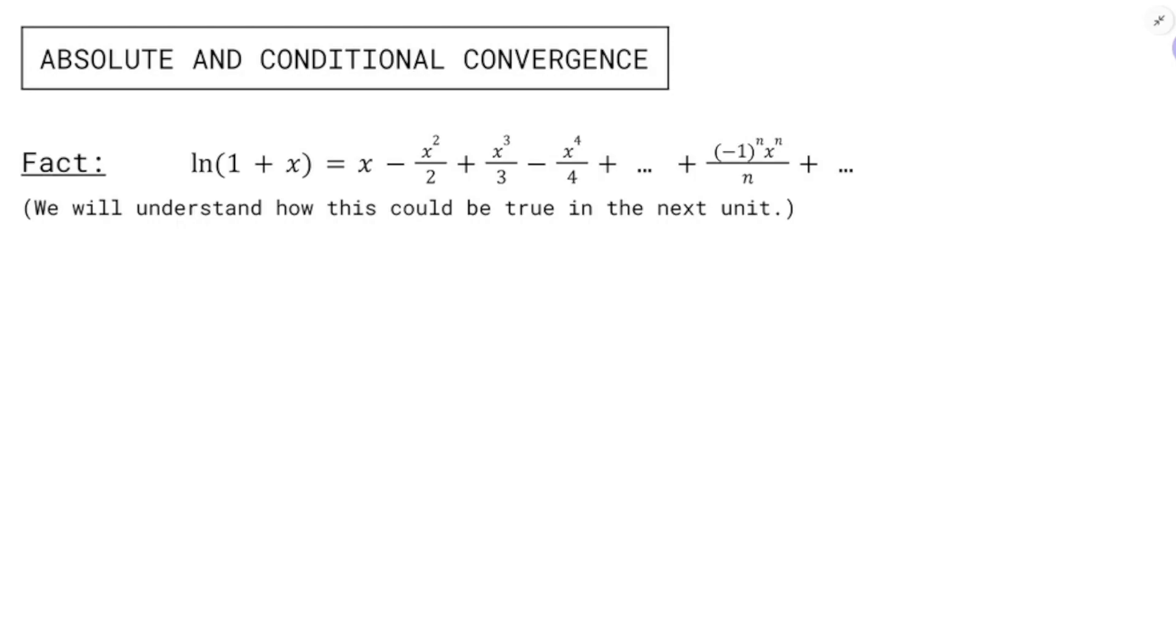In this video, we're going to continue our discussion of alternating series, and now we're going to talk about absolute versus conditional convergence, because it turns out there's two different types of convergence.